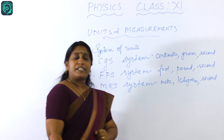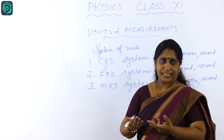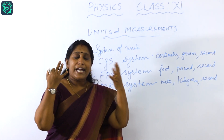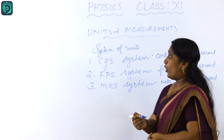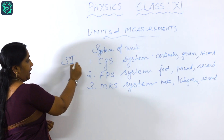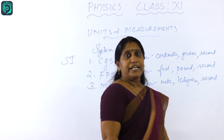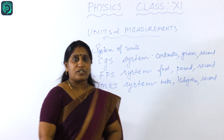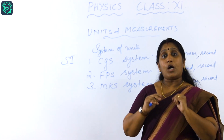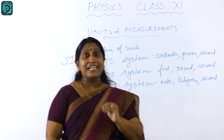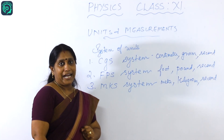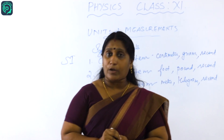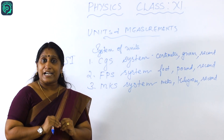These are the different systems of units applied in physics. Since there arose confusion about which system to apply, we now accept a system known as the SI system — Système International. In the SI system, the unit of length is meter, the unit of mass is kilogram, and the unit of time is seconds. Now as a student, the question arises: why have we selected the SI system?